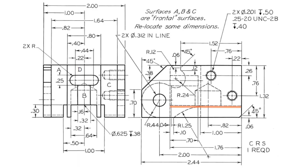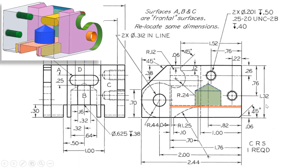There is a hole coming in from the bottom surface. We use the surface generated from the rectangular slot discussed in previous steps, and cut a hole with a diameter of 0.625 and a depth of 0.38, having a conical tip at the bottom. This is how it looks from the back side.